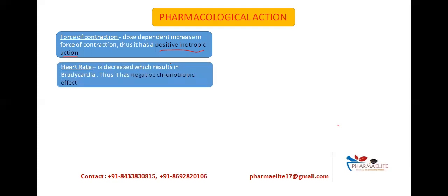Next is its effect on heart rate. Digitalis decreases the heart rate and produces bradycardia, giving it a negative chronotropic action. Chronotropic relates to heart rate, and negative chronotropic means a decrease in heart rate. Bradycardia is a slower-than-normal heart rate, while tachycardia is a faster-than-normal heart rate. So Digitalis has a positive inotropic and a negative chronotropic action.